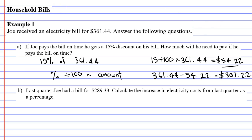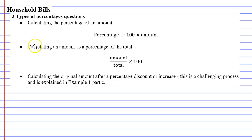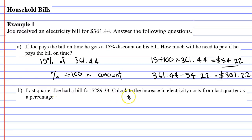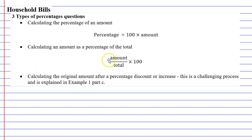This is type 2 in our percentage questions, which is calculating an amount as a percentage of the total. I know that because it wants an answer as a percentage, and that's this type of question. The formula being amount over total times 100.